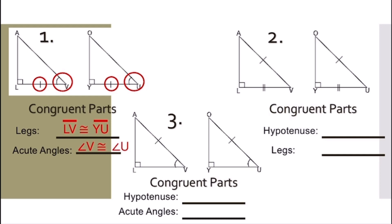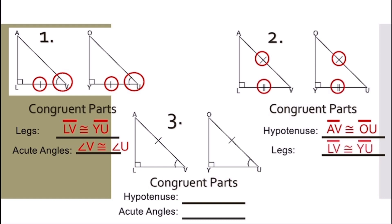For number two, the congruent parts: for the hypotenuse, line segment AV is congruent to line segment OU. And for the legs, line segment LV is congruent to line segment YU.